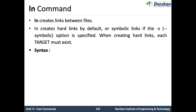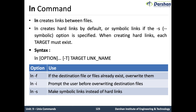The syntax of this command is: ln [options] -t [target] [link name]. The options are: -f, which overrides the destination file if it already exists; -i, which prompts the user before overwriting the destination file; and -s, which makes a symbolic link instead of a hard link.